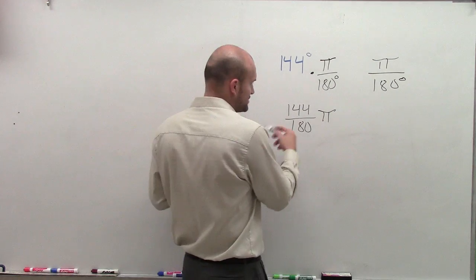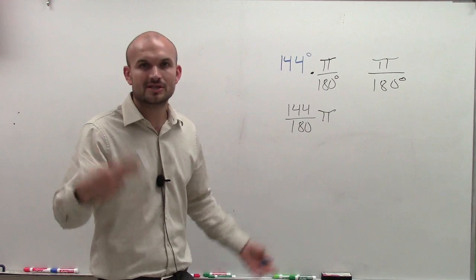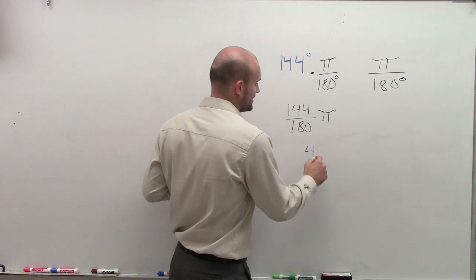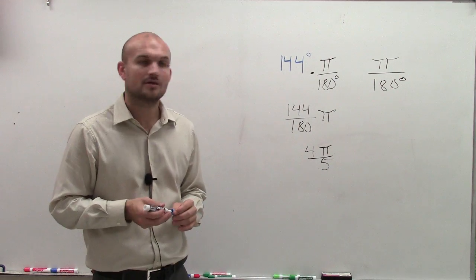When you reduce your fraction, pick numbers. If you want to start with 2, start with 2, and then keep reducing it down. What you'll end up getting when you reduce down is 4 pi over 5.